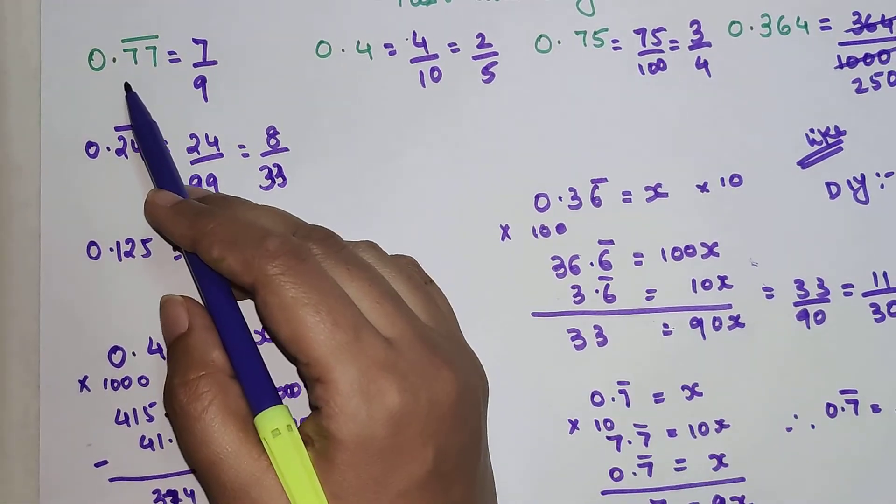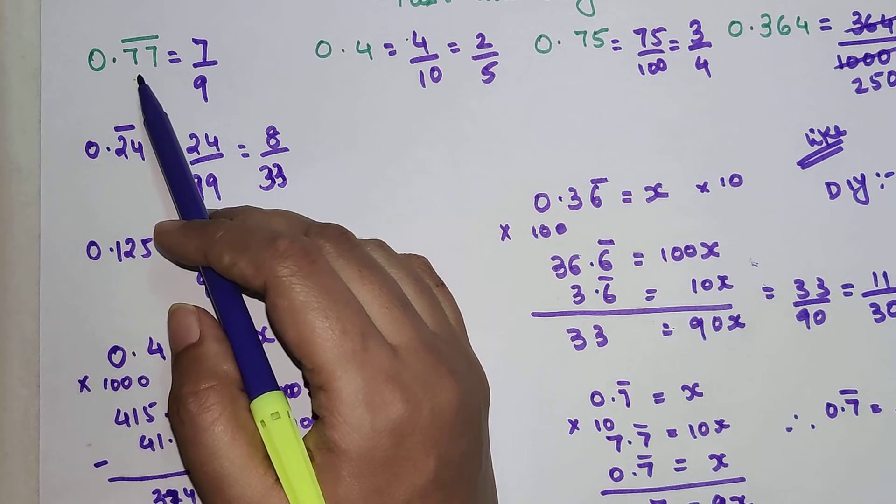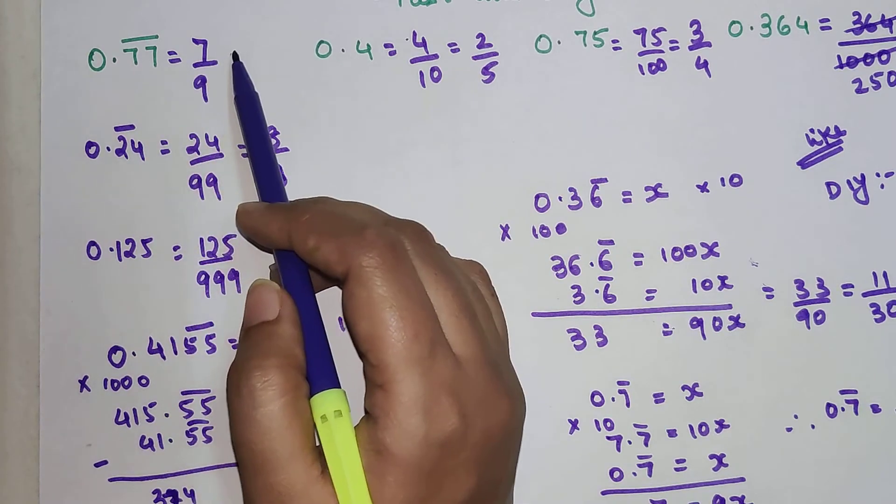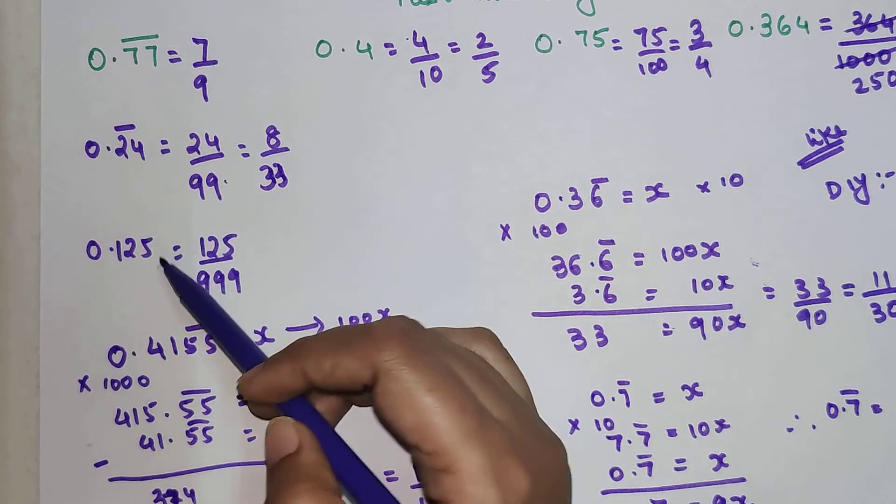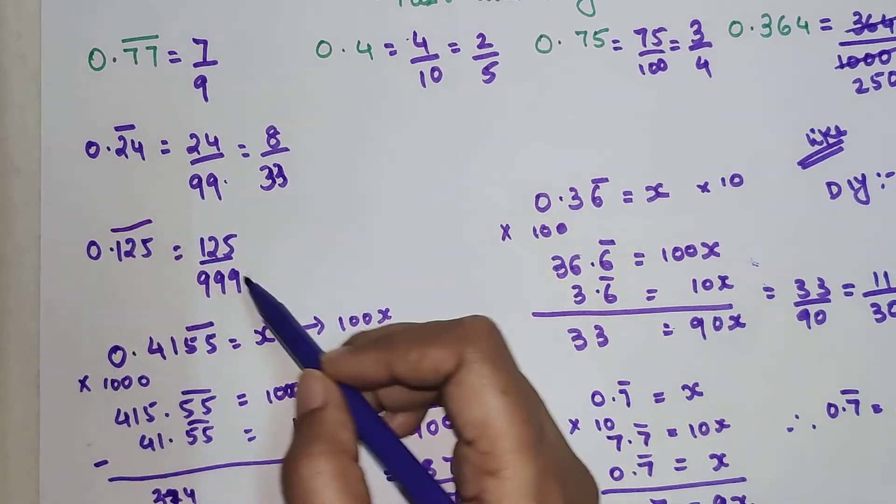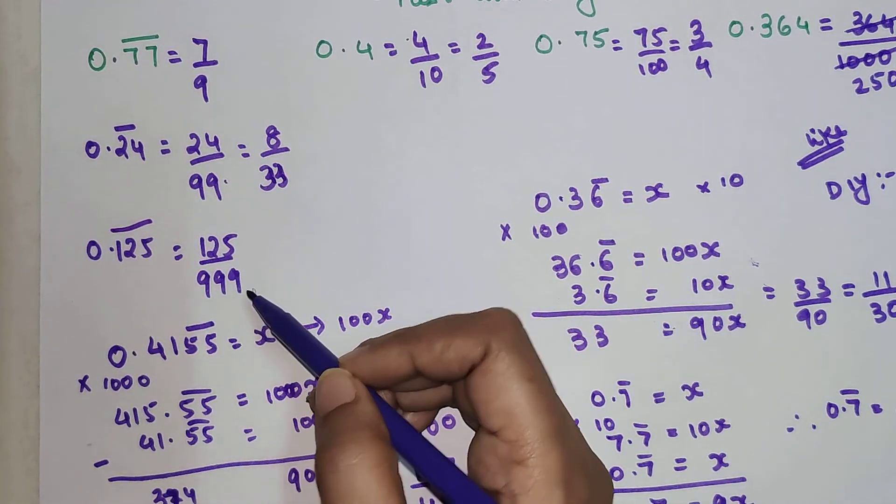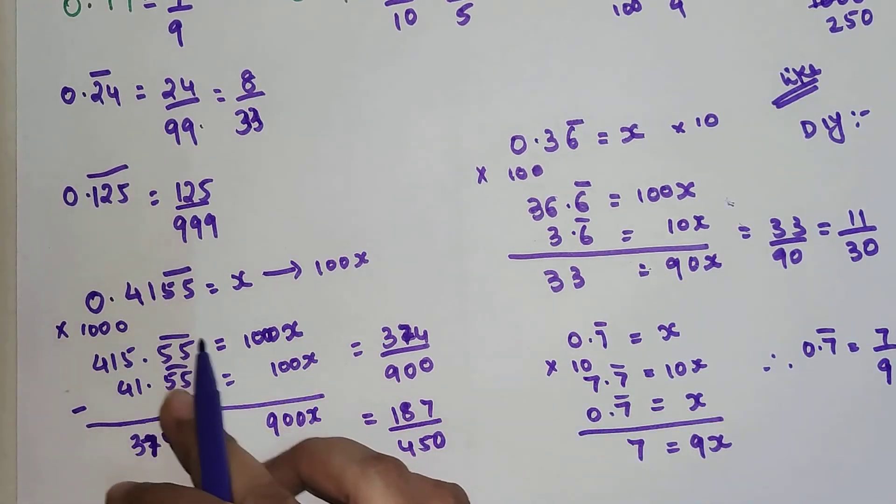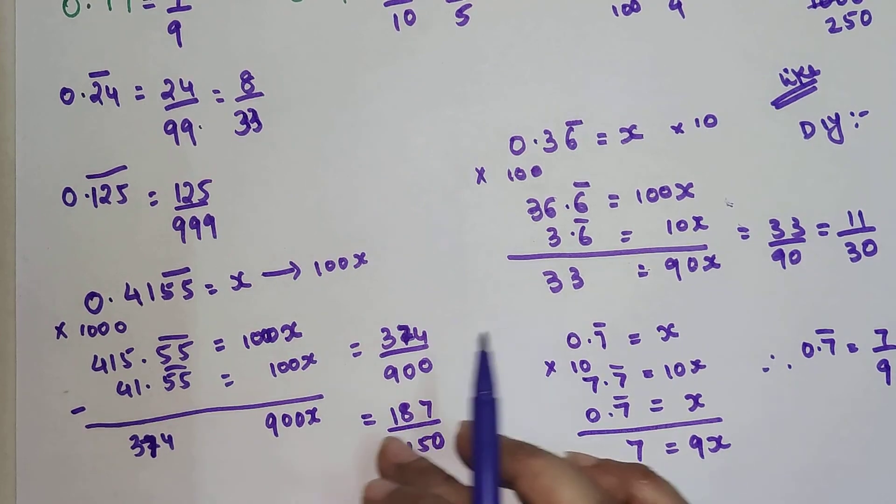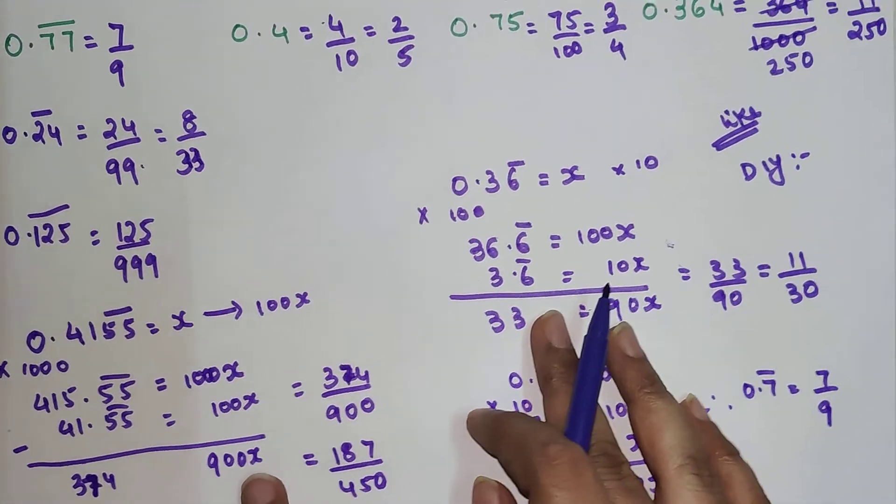So the trick for something like this: whenever you just have a decimal number, decimal point, and then the number after this immediately is recurring, then you can do this. If there are two numbers, then you write 9, 9. If there are three numbers, then you can write 9, 9, 9. But when you have something like this, then it is better to follow this particular method because this is a foolproof thing.